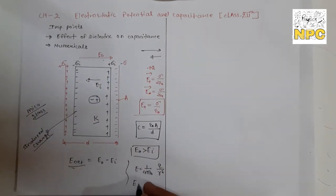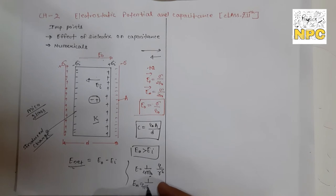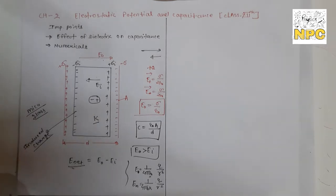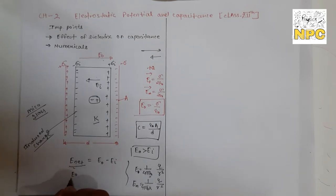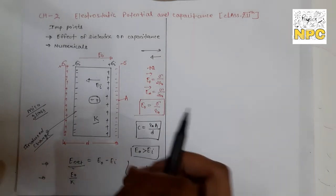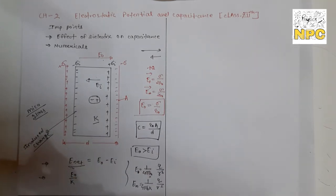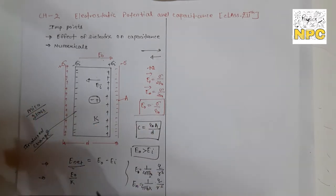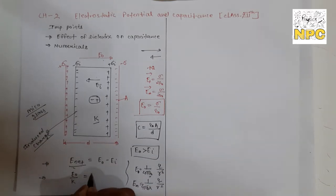For a medium, the electric field is E_net = E₀/K. This means the electric field decreases K times when we insert a dielectric medium between the parallel plate capacitor. So E₀/K equals E₀ - Eᵢ. This is clear: when a medium is inserted, the electric field is reduced by K times.